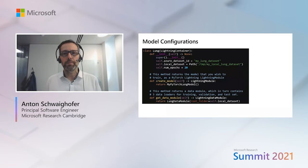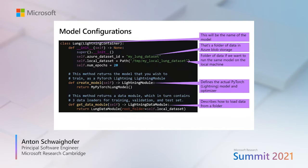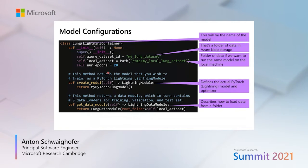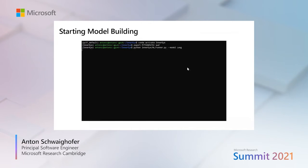How does that look like in practice? This slide shows a piece of code for a model configuration as you would write it for the InnerEye toolbox. You have here the name of the model — which is also the name of the class — the name of a folder in Azure Blob Storage specifying where your data lives, and provisions to run the same script on your local GPU machine. The two critical parts are: one method that returns the model you wish to train, and a second method that tells the InnerEye toolbox how to read data, returning three data loaders for training, test, and validation sets. Once you drop this piece of code into the InnerEye toolbox, you're ready to go with model building.